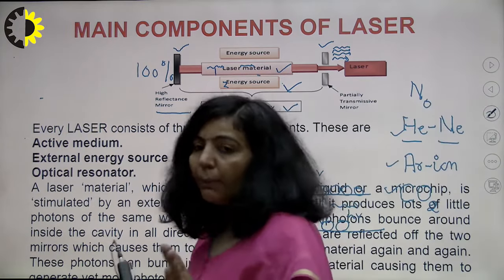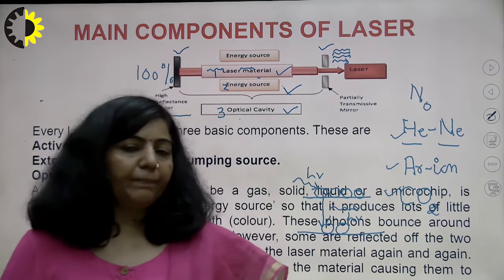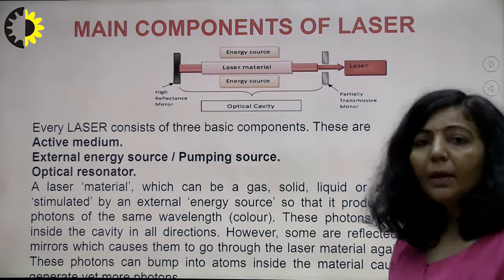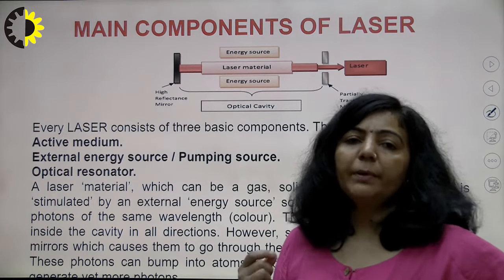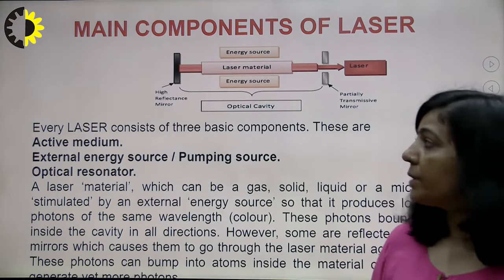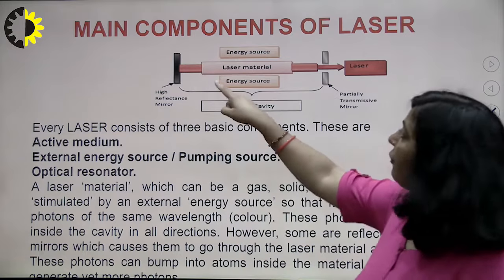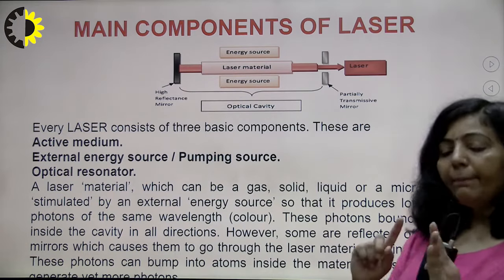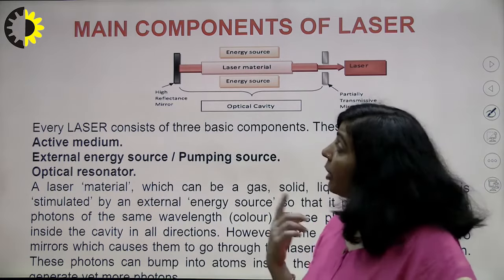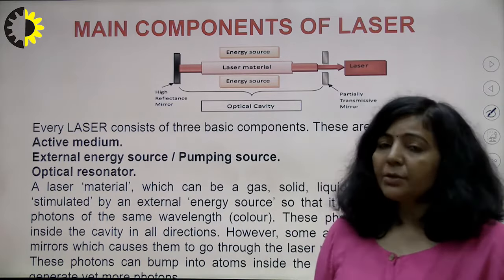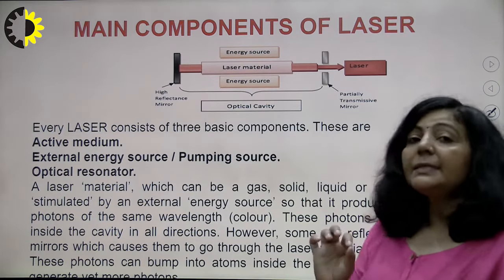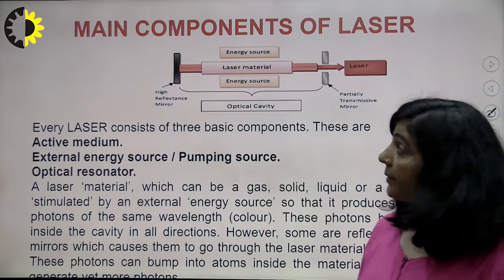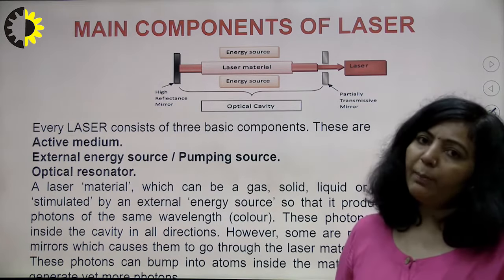Summarizing the three components: First, active medium — a collection of atoms, ions, or molecules in which you achieve population inversion. Second, pumping source — the energy source with which you achieve population inversion. Third, optical cavity — a combination of two mirrors at the two ends of the active medium, also known as resonant cavity. Without active medium, pumping source, or resonant cavity, a laser cannot work. These three components play a very important role in the amplification of light.